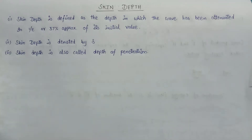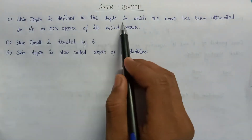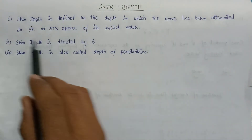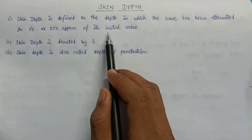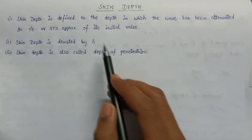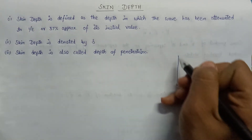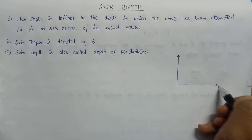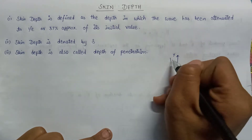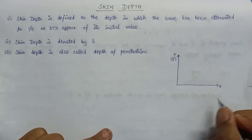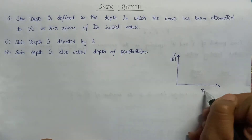Welcome. In this lecture we are going to learn about skin depth. Skin depth is defined as the depth at which the wave has been attenuated to a factor of 1 over e, or we can say 37% of its original value. Let us consider a good conducting medium into which the uniform plane wave is entering. The x-axis represents distance, and the y-axis represents our electric field.